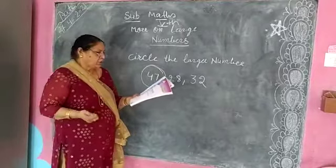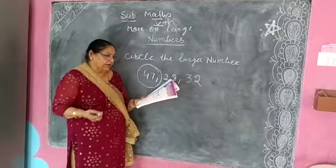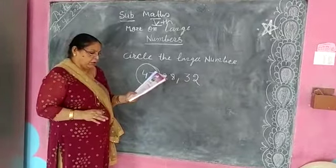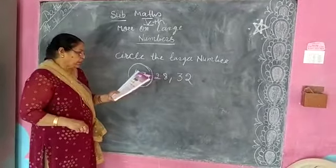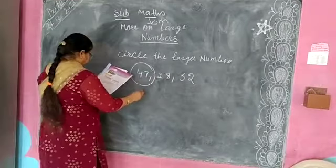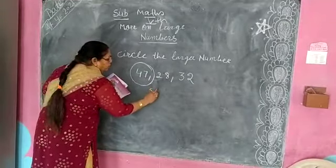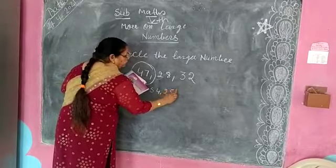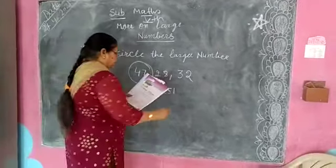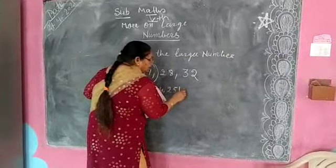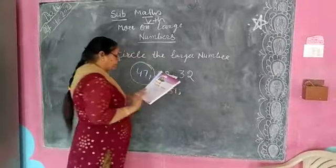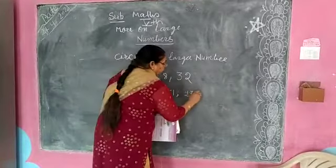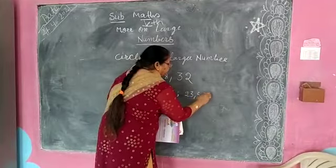Common question number 2: Circle the larger number. It is given in your math book. Base question 1 — here the numbers given are 54, 251, 23, 5, 57, 4. A semicolon separates one number from the other.